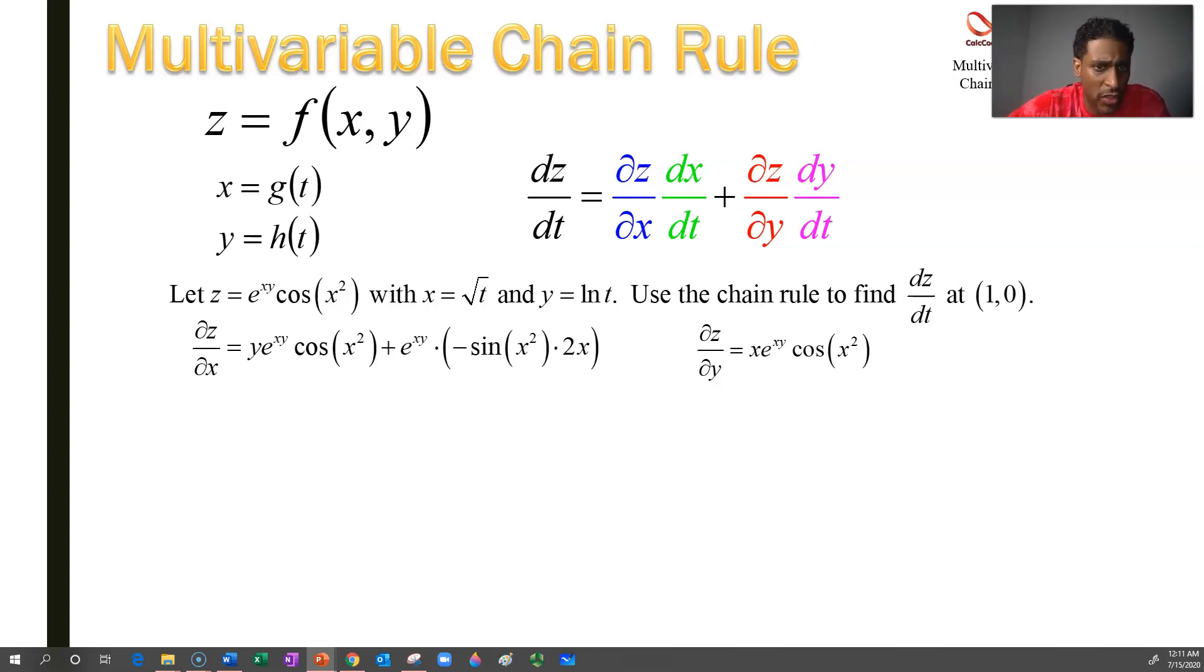And now, we just need the derivatives of x with respect to t and derivative of y with respect to t. If x is root t, its derivative is 1 over 2 root t. If y is natural log of t, its derivative is 1 over t.